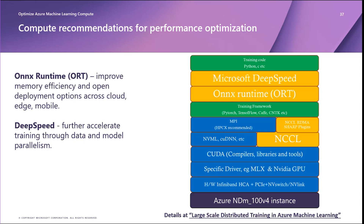Both ONNX and DeepSpeed are popular choices with startups on the Microsoft for Startups GPU cluster for accessible extreme-scale model training with direct support in Azure Machine Learning. Startups have also successfully used alternatives to DeepSpeed such as PyTorch Lightning, Horovod, FairScale, and Megatron LM to make the most of their GPU cluster reservation.